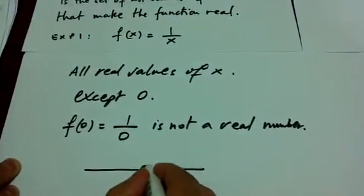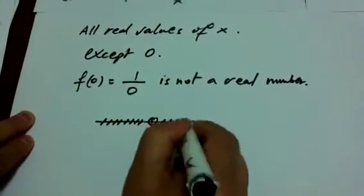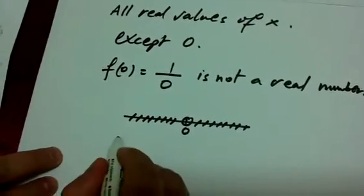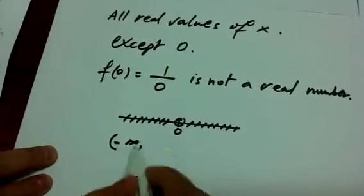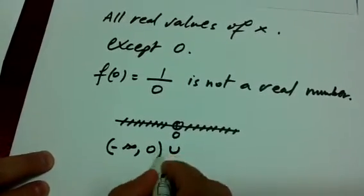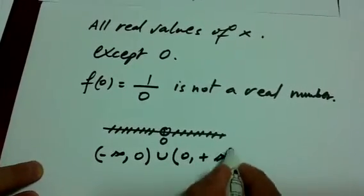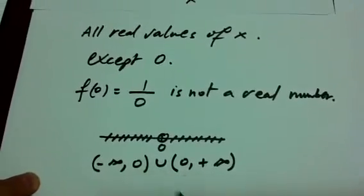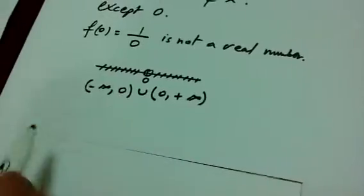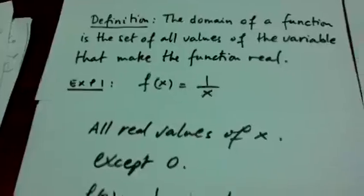So the domain will be all real values except zero. We put an open circle on zero on the number line. Using interval notation, we write negative infinity to zero, open, union open zero to positive infinity. The zero is excluded when we open the interval on both sides.